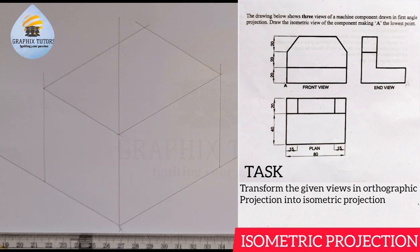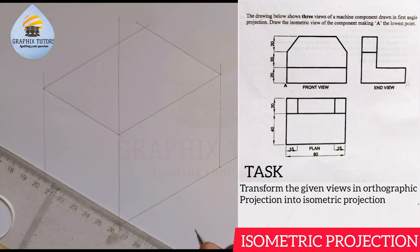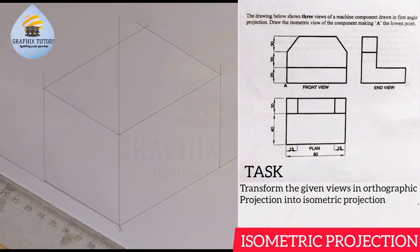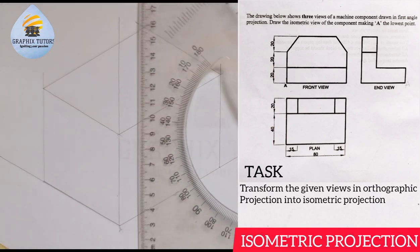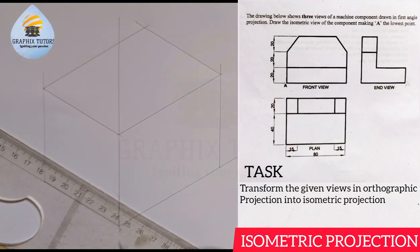Whatever the end view shows, our lowest point is A. From here to here is what we measured, which is 60. Now, the thickness from here to here, as I mentioned earlier, is the same from here to here — and that is 20. So I measure 20 from 0 to 2, which is 20. I can thicken it — from 0 to 20 — then I'll draw faint lines.